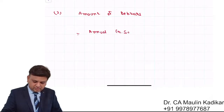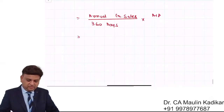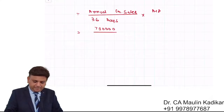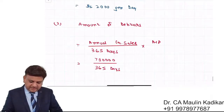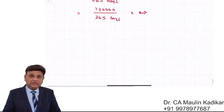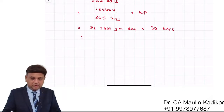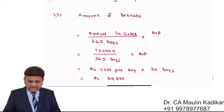We assume that the entire sales is on credit in absence of any clarification. The formula is: annual credit sales divided by 365 days, multiplied by the average collection period. That is ₹7,30,000 divided by 365, multiplied by 30 days — which equals ₹2,000 per day into 30 days — giving us ₹60,000. That is the amount of debtors.